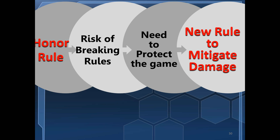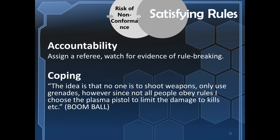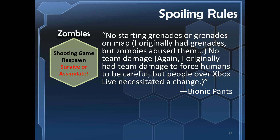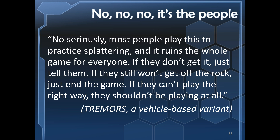Here are two highlights of the types of rules that players recommended. Employ accountability: assign a referee, watch for evidence of rule breaking — if we're playing a game where you're not allowed to shoot anyone and I get an achievement for a headshot, that exposes the fact that I broke a rule. Or coping: some rule changers just assume that rules that could be broken will be broken, and they add rules to mitigate the expected damage. In Boom Ball, the solution is to leave only weak guns on the map — the idea is that no one is to shoot weapons, only use grenades, but since not all people obey rules, I choose to place a plasma pistol to limit the damage. And certain options were simply considered too broken to mend — one rule changer warned against allowing grenades in the Zombies variant for how much it would ruin the spirit of the game. Sometimes it's just a matter of booting uncooperative players.